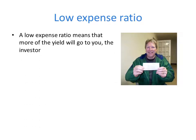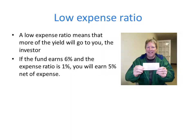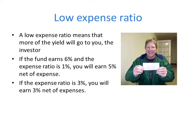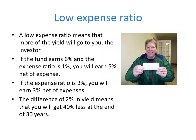A low expense ratio means more of the yield of the fund will go to you, the investor. For example, if the fund earns 6% and the expense ratio is 1%, you will earn 5%. If the expense ratio is 3%, you will only earn 3% after deducting expenses. The difference of 2% in yield means you will get 40% less at the end of 30 years. So it makes a lot of difference whether you get 2% higher or 2% lower in yield.